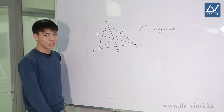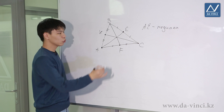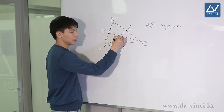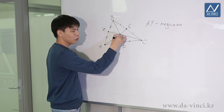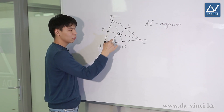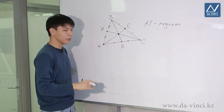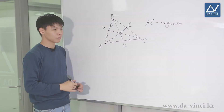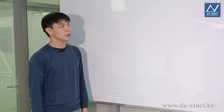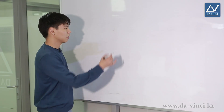There is a very important property of medians: all three medians of a triangle intersect at one point. But we will not prove this right now.